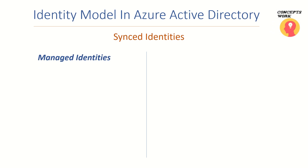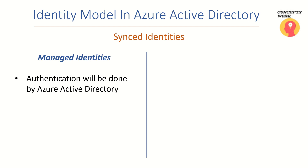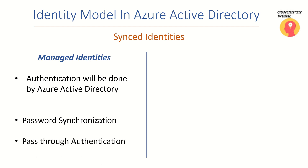Synced identities are divided into two components. The first is managed identities — where authentication is done by login.microsoftonline.com, which is Azure AD. If authentication is completed by Azure AD, it is a managed identity, meaning you have not federated your domain. This can be achieved in two ways: password synchronization and pass-through authentication. I have a separate video on pass-through authentication linked in the description.